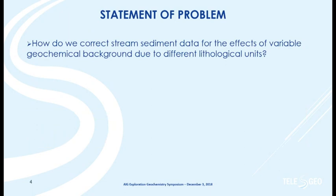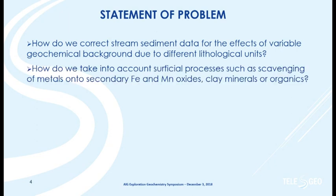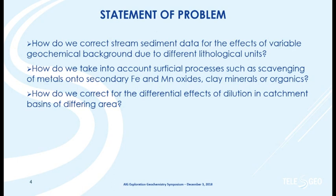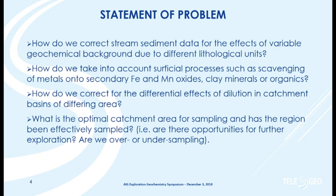The problem we have is that when dealing with stream sediment data from regional surveys, we have quite variable background values, which causes complications in interpreting anomalies because we have different lithologies. Other processes affect stream sediment samples — we can have scavenging of metals, causing elevated false anomalies for some commodity elements. We also have different size catchments, so the dilution effect on our geochemistry varies with catchment size. And what is the optimum catchment area for a particular survey? We need to use this to become more efficient in exploration.